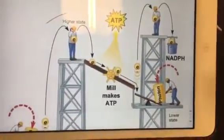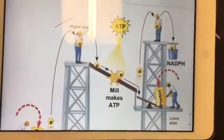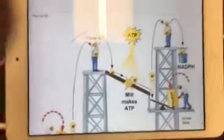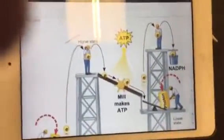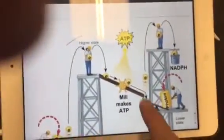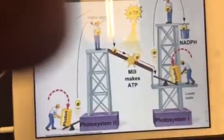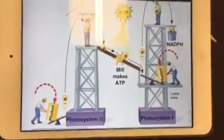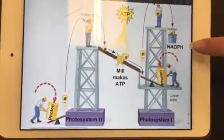This figure is an example of how photons can excite the energy of electrons, going from a lower state of energy to a higher state of energy, which is then stored as NADPH.